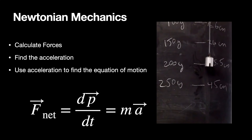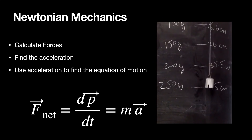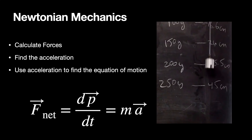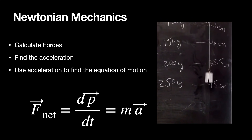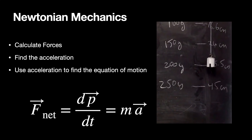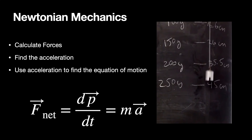You find F-net and set it equal to dp/dt or mass times acceleration. Once you get that expression for acceleration, you can integrate to find the velocity, and integrate again to find the position. It may be tough to do, but you can get some expression for the acceleration, and once you do that, you're pretty much done.